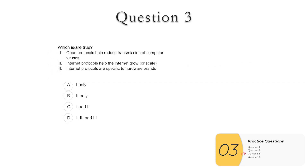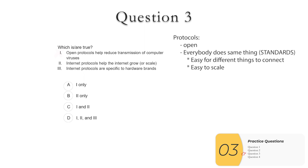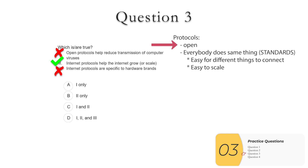Question three — which is or are true? One: open protocols help reduce the transmission of computer viruses — not true; protocols are here to help you connect easily and scale. Two: internet protocols help the internet grow or scale — this is true; it makes it easy for computing devices to connect with each other. Three: internet protocols are specific to hardware brands — not true; protocols are open and not decided by companies. Answer is B: two only.